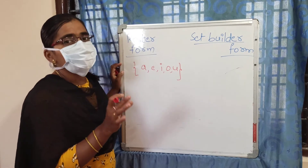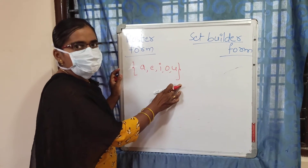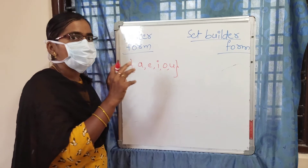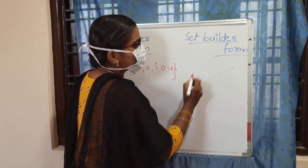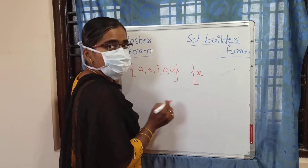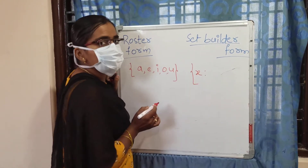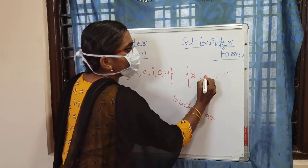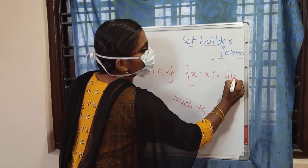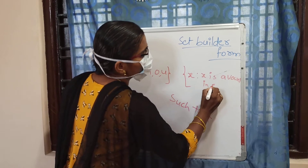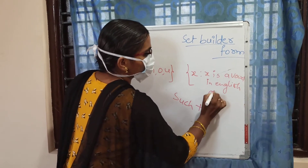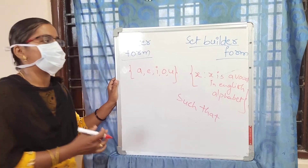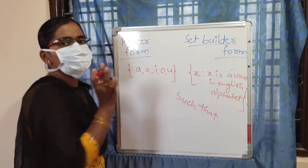Roster form means if we write all elements in the set, that is called roster form. Set builder form means we won't write all elements — just what relationship they follow. We write it as: x such that x is a vowel in the English alphabet. The two dots mean 'such that.' If we write like this, this is called set builder form.